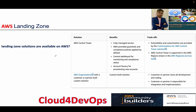In terms of solutions available for Landing Zone in AWS, we have two: Control Tower and AWS Organizations, where you build your own managed environment. The benefits of Control Tower include: it's a fully managed service so we don't worry about the backend; AWS-provided guardrails and compliance policies are applied by default; there's a central dashboard for monitoring and compliance; and an Account Factory for provisioning new accounts — essentially a vending machine for creating accounts.